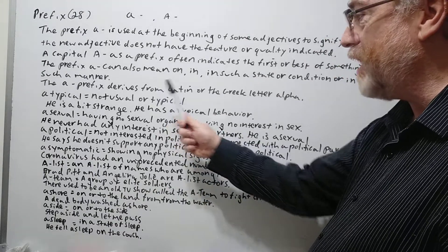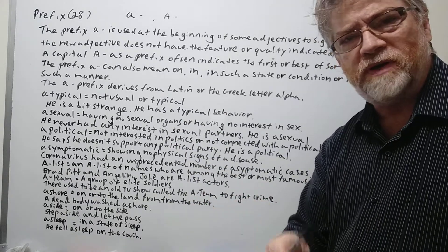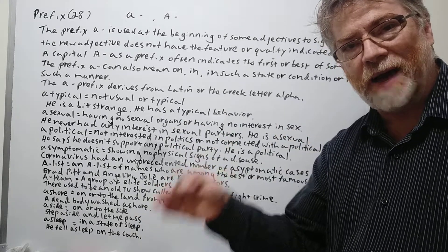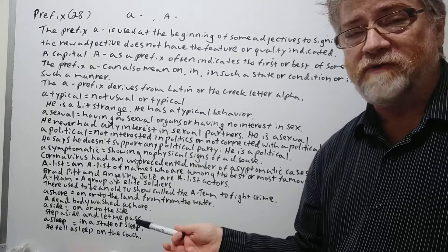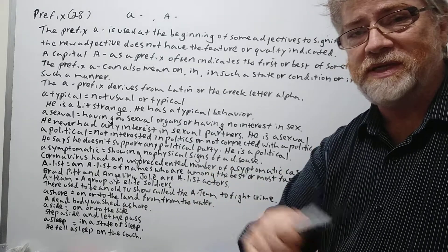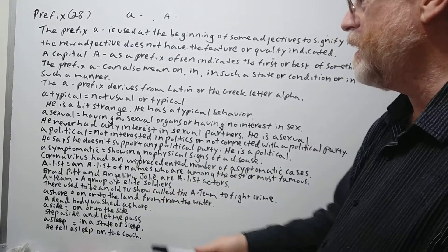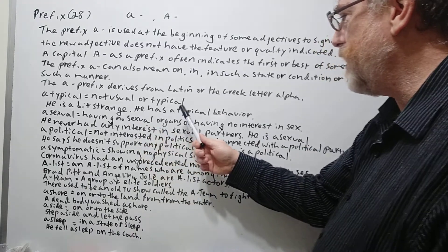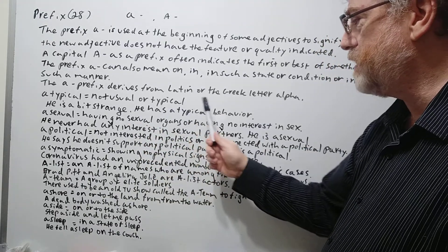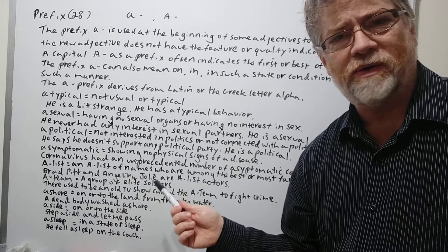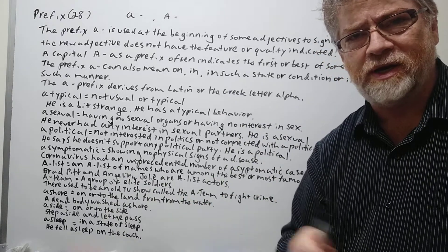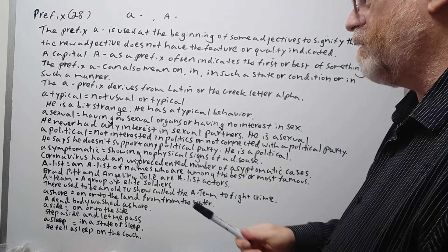Atypical means not usual or not typical. We have a lot of prefixes that make a word kind of have the opposite meaning. So typical would be very common, but if it's atypical it means that it is not common. He is a bit strange. He has atypical behavior. So very behavior that's not common or not ordinary.